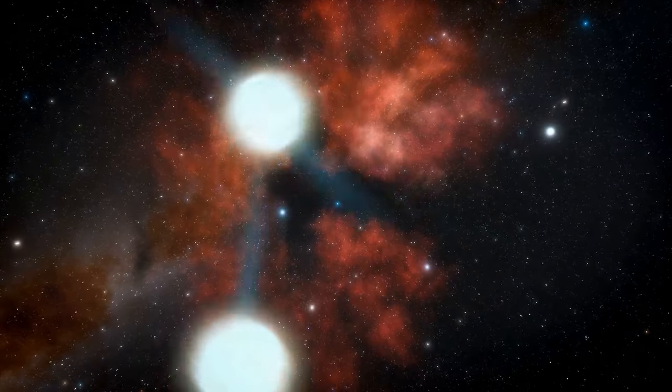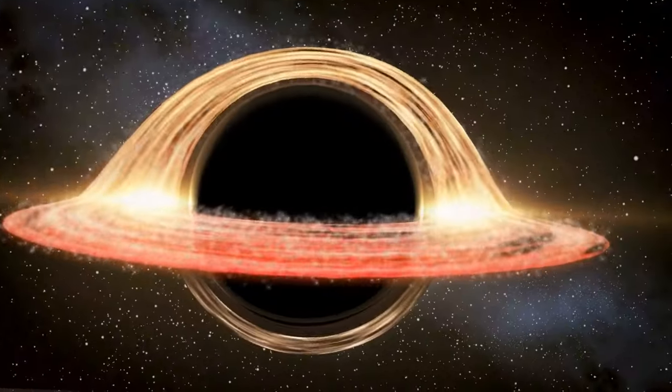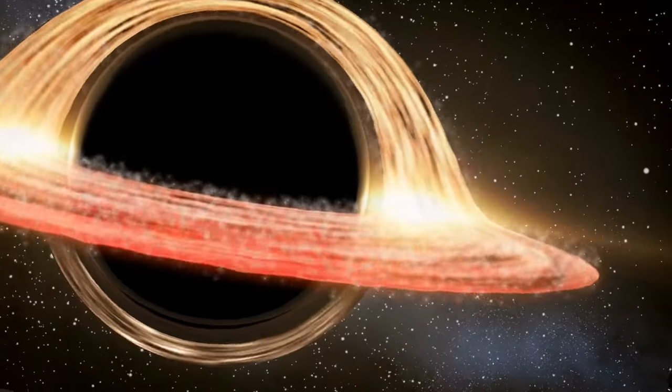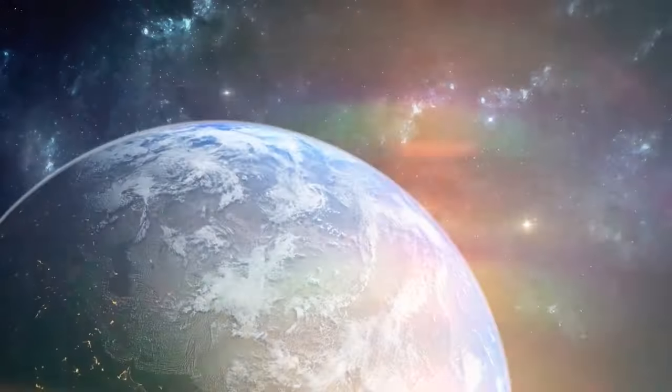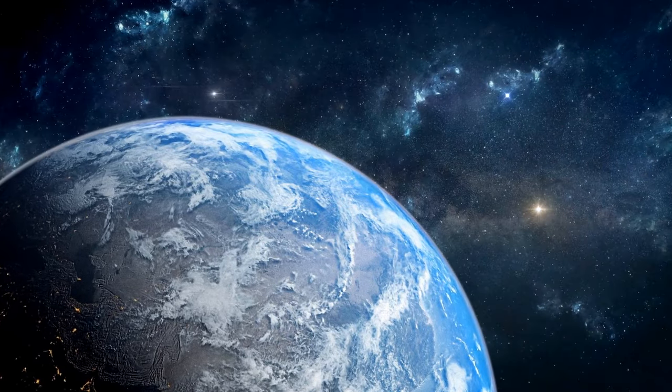When two neutron stars merge, they most often create a new, much heavier one. Within milliseconds or even less, this star collapses into a black hole. But the astronomers who examined the flash of light recorded in March think there might be another outcome.